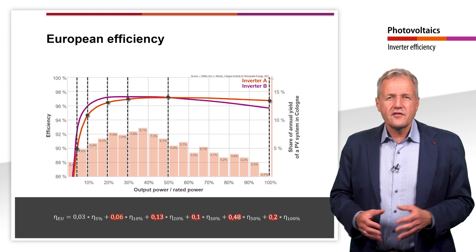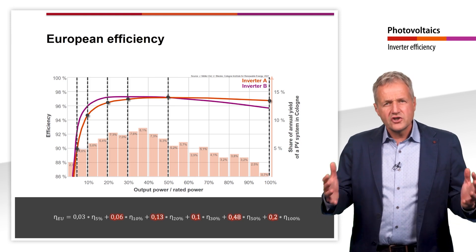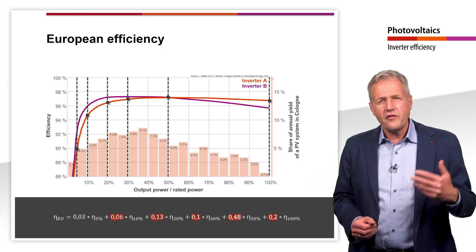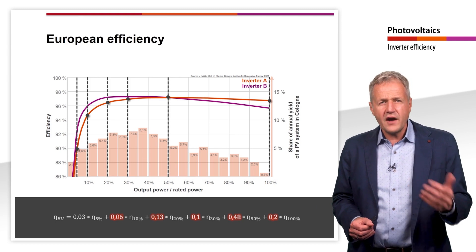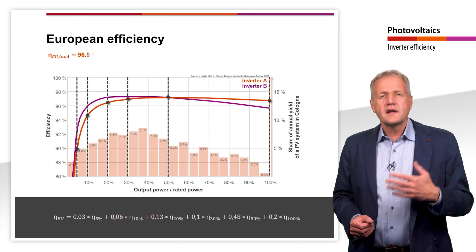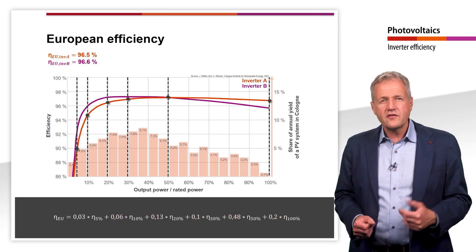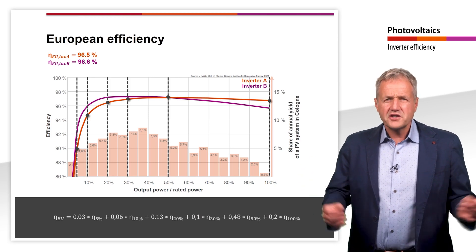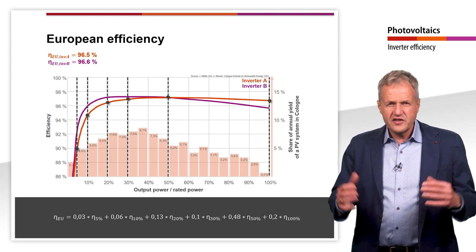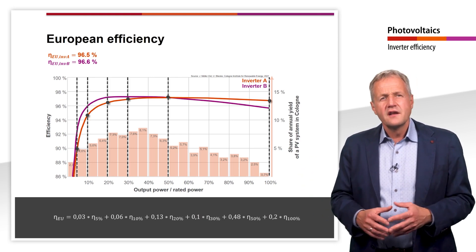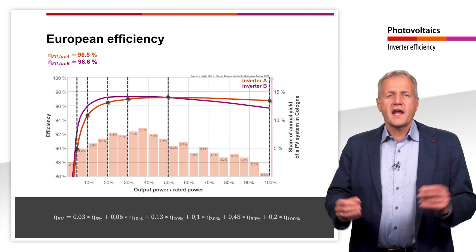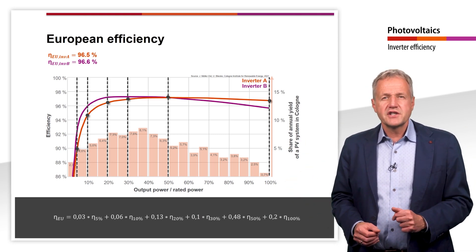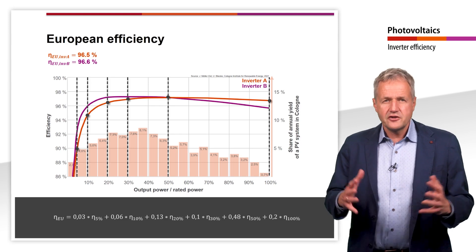Applying this formula to the inverters shown here results in a European efficiency of 96.5% for inverter A and 96.6% for inverter B. The European efficiency is of course only an approximation, since Central Europe covers a large area in which regionally very different irradiations are to be expected.